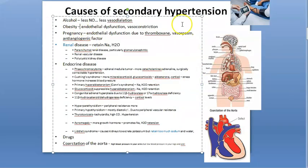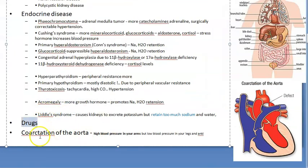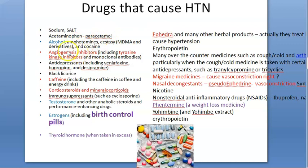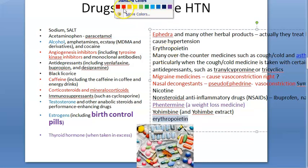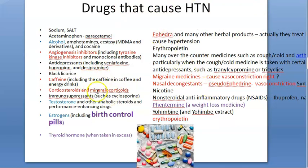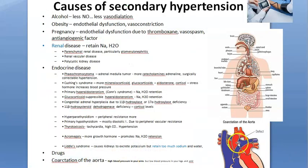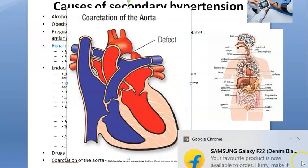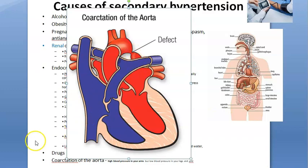In summary, the causes of secondary hypertension are: alcohol, obesity, pregnancy, renal disease, endocrine causes (adrenal issues, parathyroid, hypothyroidism, thyrotoxicosis, acromegaly), Liddle's syndrome, drugs (steroids, testosterone, birth control pills, nasal decongestants, migraine medications, ephedra, erythropoietin, excess salt, angiogenesis inhibitors, alcohol, caffeine, thyroid hormone), and coarctation of the aorta — where there is high blood pressure before and low blood pressure after the coarctation.